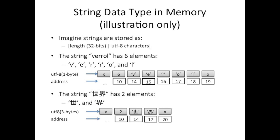So if you want to store a string like 'Vero', the first 4 bytes say this is a 6-character string, and then the 6 characters follow. On the other hand, if we're storing Chinese characters, and we only have two Chinese characters, those first 4 bytes say there are two characters in this string — but each character takes up 3 bytes. So we need 6 additional bytes to store those two characters. The total bytes for our string is always the 4 bytes for the length, plus the number of characters times the bytes allocated per character. Does that make sense?